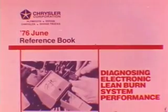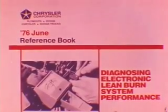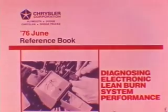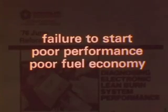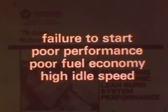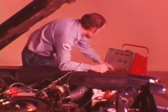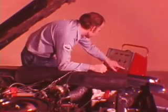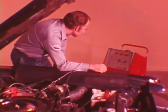In our June 1976 session, you saw how to troubleshoot the lean burn system by using the point-to-point system for diagnosing failure to start, poor performance, poor fuel economy, and high idle speed. Now you can do all this and more, faster and easier, with the electronic Spark Advance system analyzer. In spite of all the complex tests performed by the analyzer, it is remarkably easy to use.